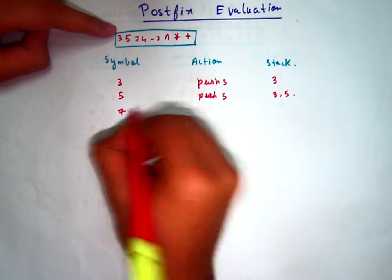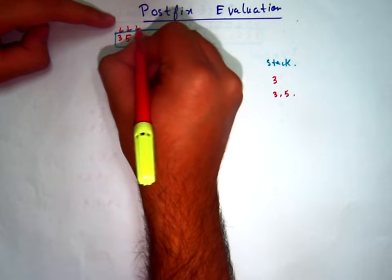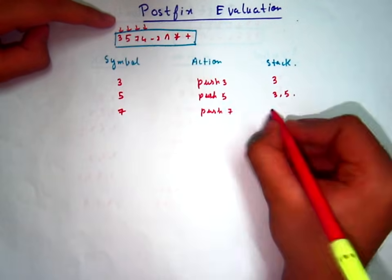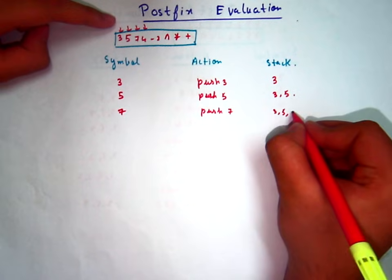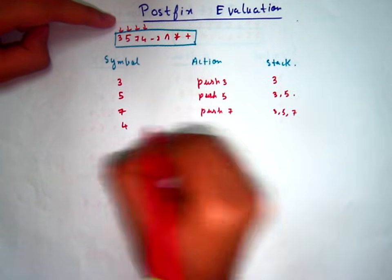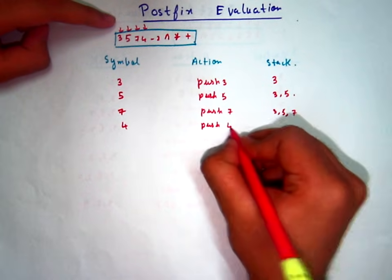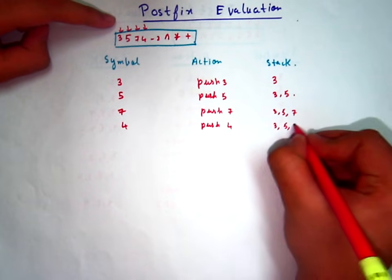Same goes with 7. Push 7. 3, 5, 7. Then comes 4. Push 3, 5, 7, 4.